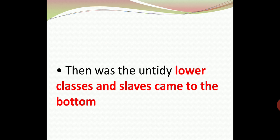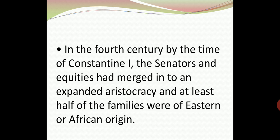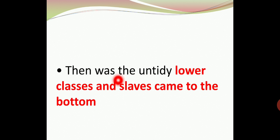And then was the untidy lower class, known as plebs sordida, who came next in the hierarchy. Tacitus tells us they were addicted to the circus and theatrical displays. And finally, at the bottom, slaves were there.